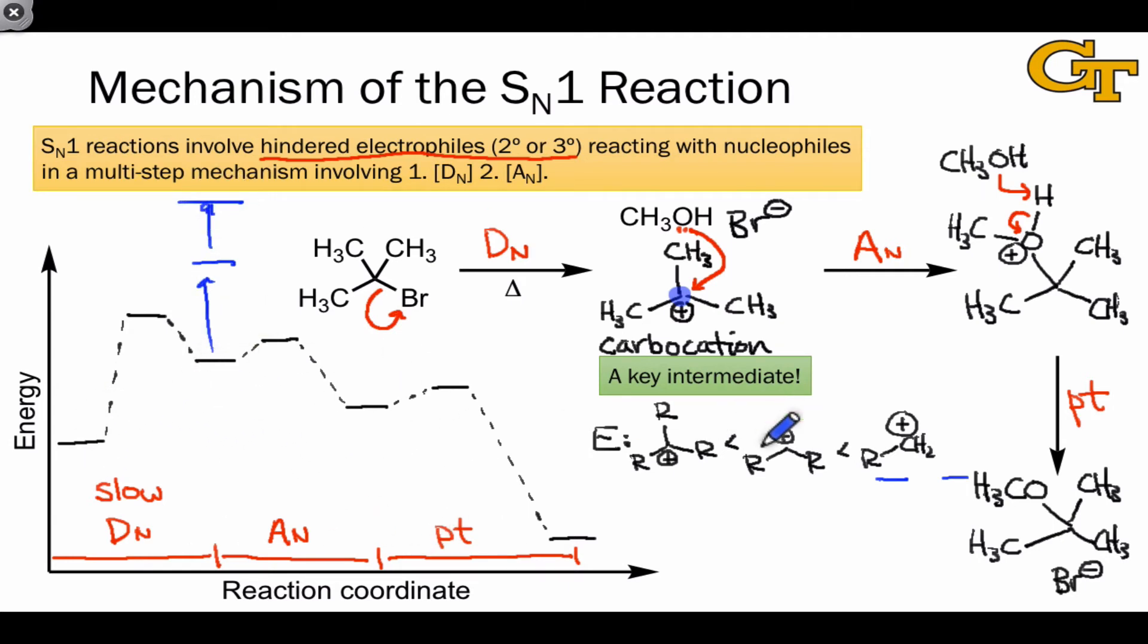And so the primary and methyl carbocations absolutely do not form in SN1 reactions.